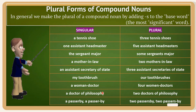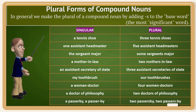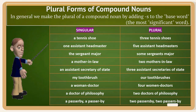For 'doctor of philosophy,' the plural is 'doctors of philosophy.' For 'passerby,' the plural is 'passersby' — you add 's' to 'passer,' written as 'passers-by.' There are many other kinds of compound nouns, but the key is to identify the head of the noun — the significant word — to correctly form the plural.